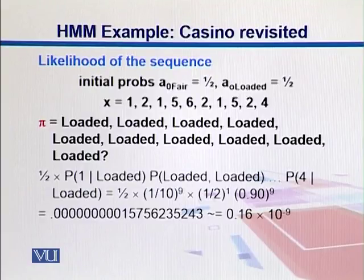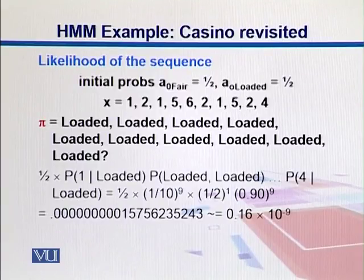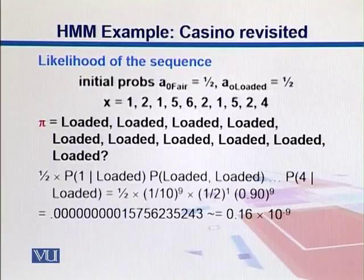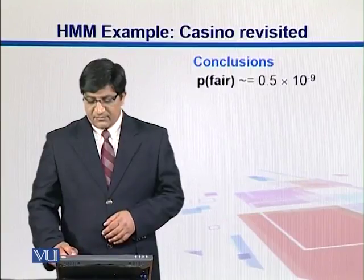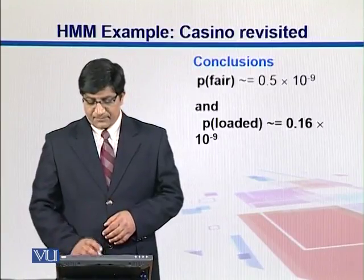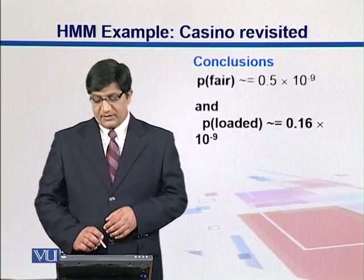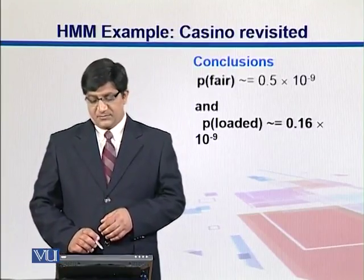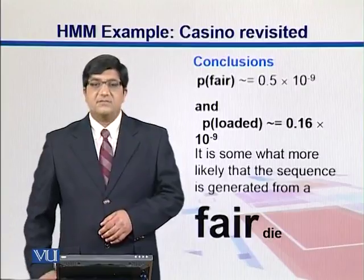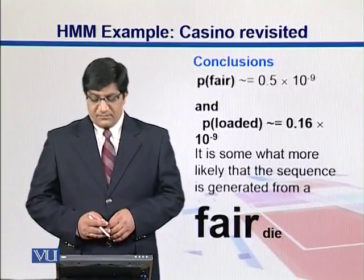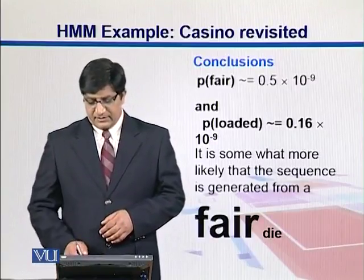When we calculate that, the probability goes to 0.16 × 10^-9. So which one is greater? The greater one is better. So probability of fair is 0.5 × 10^-9 and loaded is 0.16 × 10^-9. So obviously this trial is fair. So we have used a fair die because fair has a greater probability.